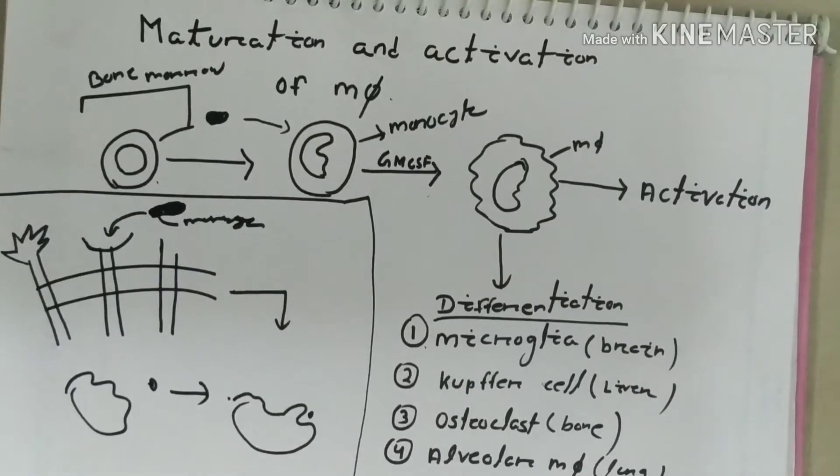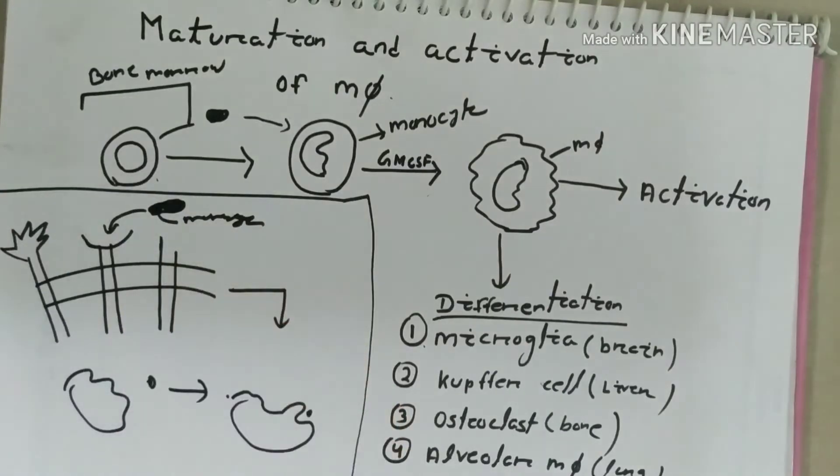Hey guys, in this video tutorial we will be learning about maturation and activation of macrophage, which is abbreviated as MΦ and is formed from bone marrow cells through a series of pathways. Primarily, the bone marrow forms a myeloid progenitor cell.